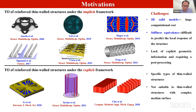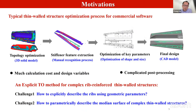Some research performs topology optimization on reinforced shell structures based on 3D solid models; some use the stiffness increments technique. However, 3D solid models bring huge computational cost, and the stiffness increments model is difficult to capture the local response of the structure such as stress and local buckling. In recent years, topology optimization of reinforced shell structures has also been studied under the explicit framework, but these methods are often only suitable for one type of shell structure.